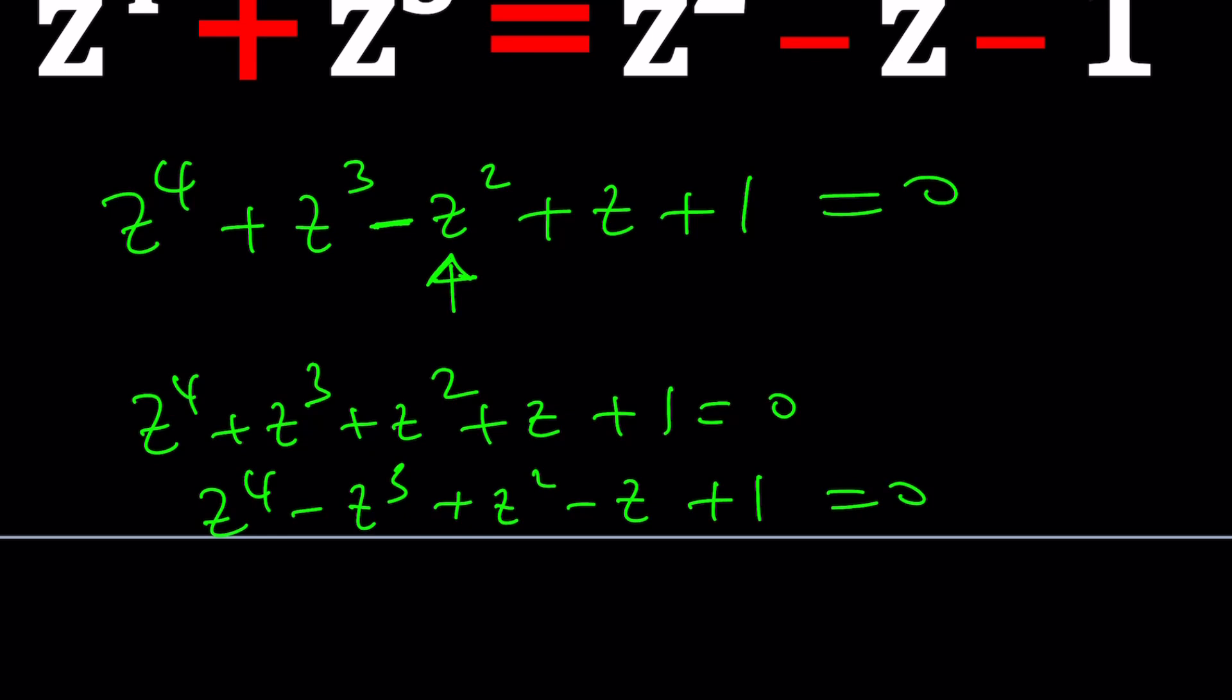Or if you had something like this, that's also different right because the signs alternate. Again I could turn this into something workable, but this one is entirely different because the minus sign only appears in the middle. Make sense? But it's still symmetrical so here's how we're going to handle it.